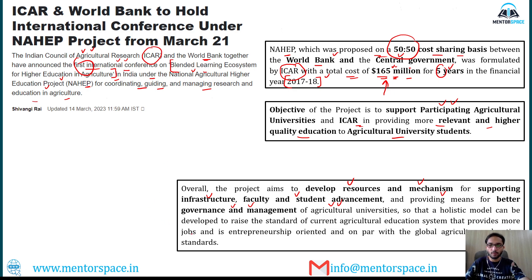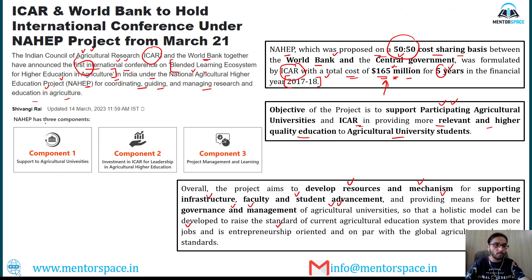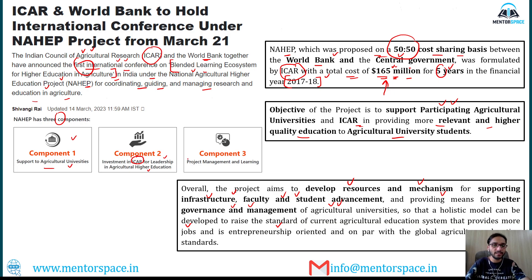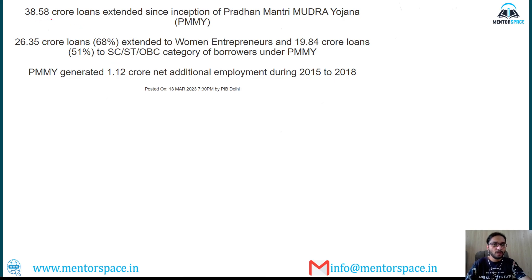Under this program, job and entrepreneurship-oriented thinking is to be developed among students of agricultural universities. The NAIP project has three components: Component 1 — support to agriculture universities in terms of infrastructure, faculty, student advancement, and governance; Component 2 — investment in ICAR for leadership in higher agricultural education; and Component 3 — project management and learning.